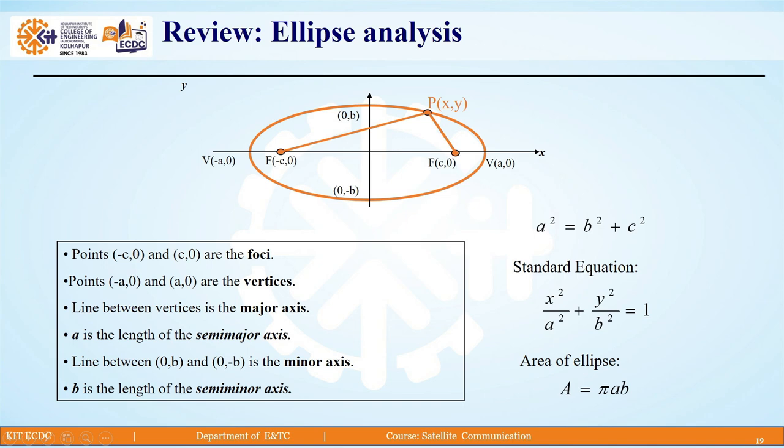a is the length of the semi-major axis and the line between points (0,b) and (0,-b) is the minor axis. b is the length of the semi-minor axis. We have equations for ellipse: a² = b² + c². The standard equation is x²/a² + y²/b² = 1. Area of ellipse is A = πab. These are some key points which are required to remember.